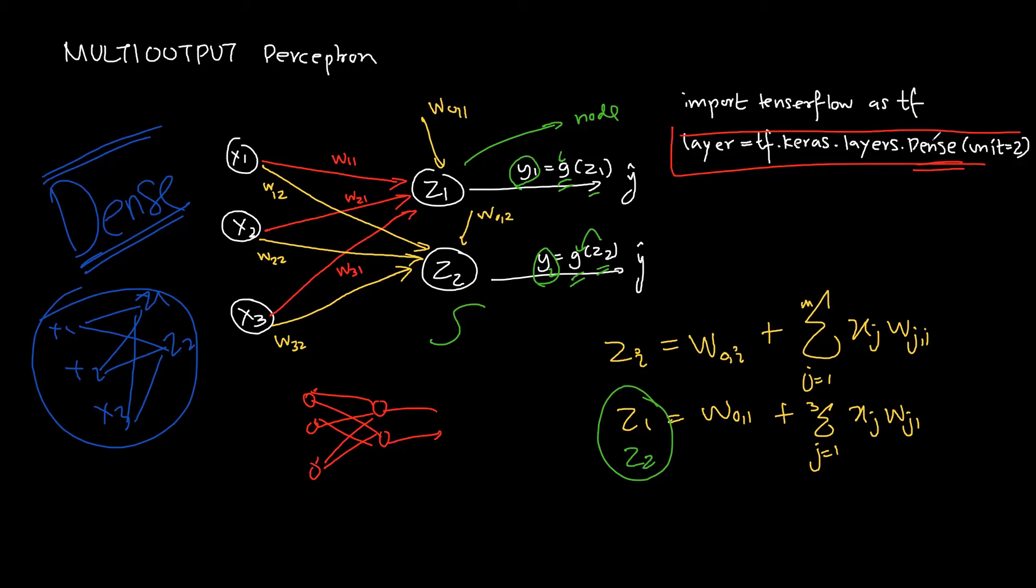I've just told this particular thing because you might get confused why I'm using this. Dense layer is basically this - it's a layer. Keras and TensorFlow are basically libraries and dense is basically representing that I want all the connections.